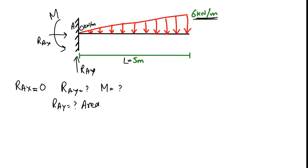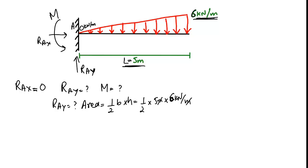To find R_ay, we find the area of the triangle representing the load. The area equals half base times height: half multiplied by 5 meters (base) multiplied by 6 kN/m (height).